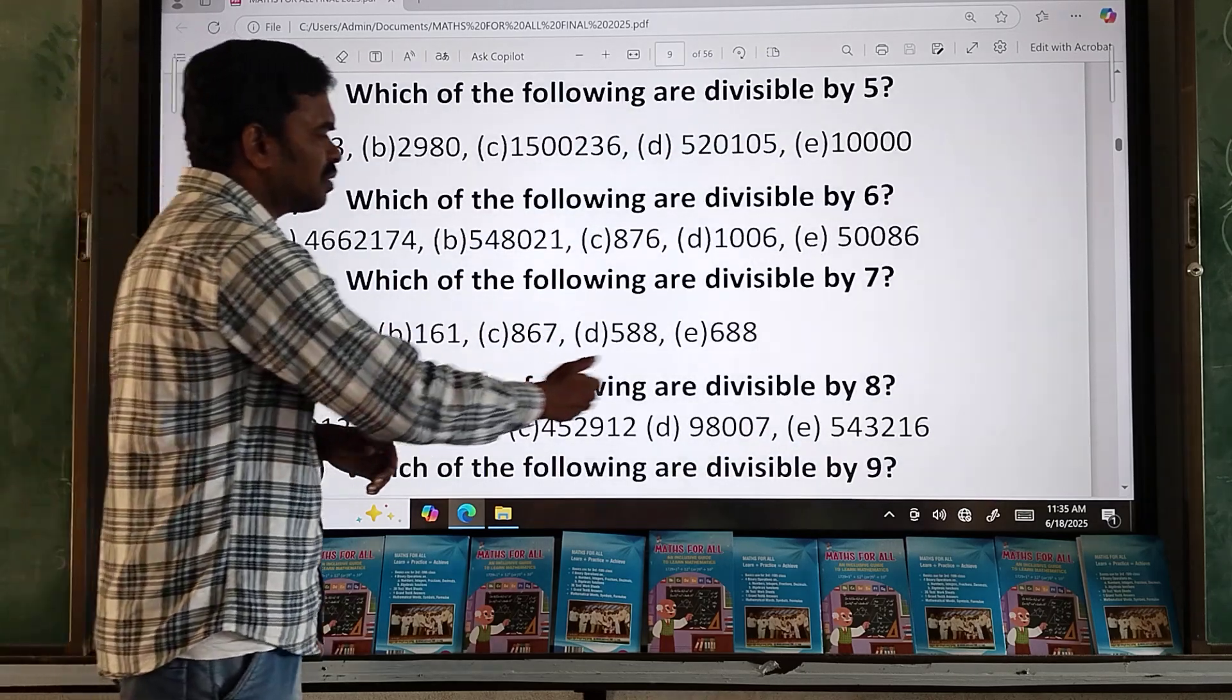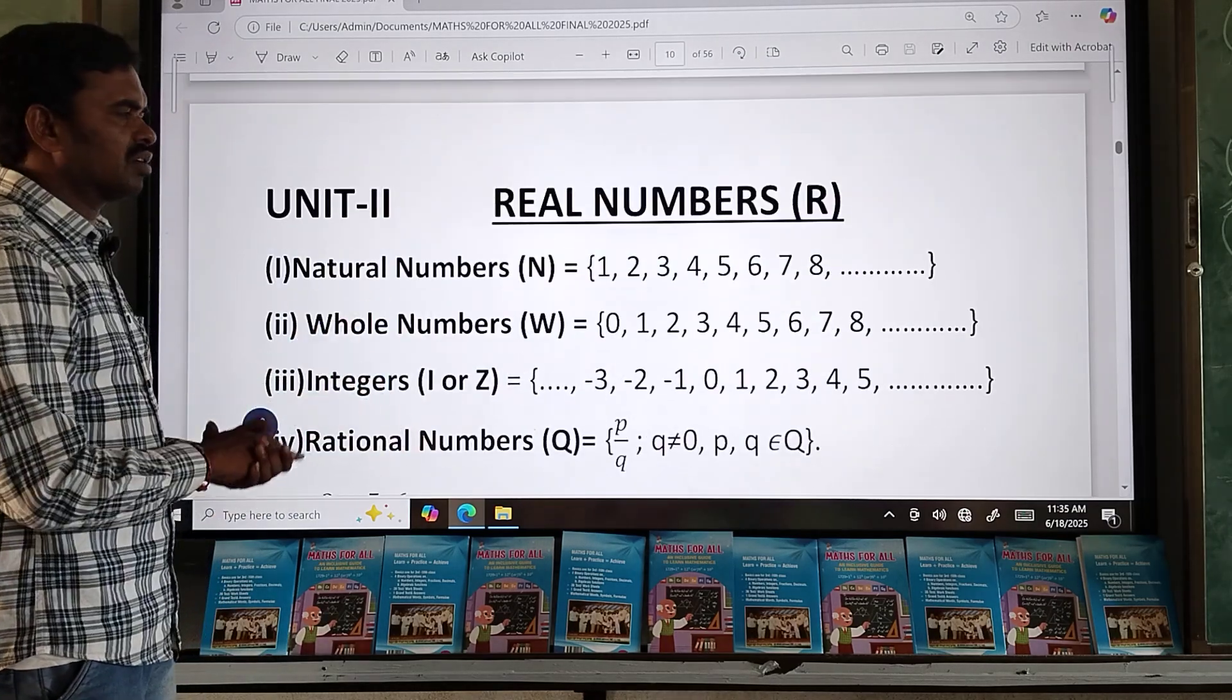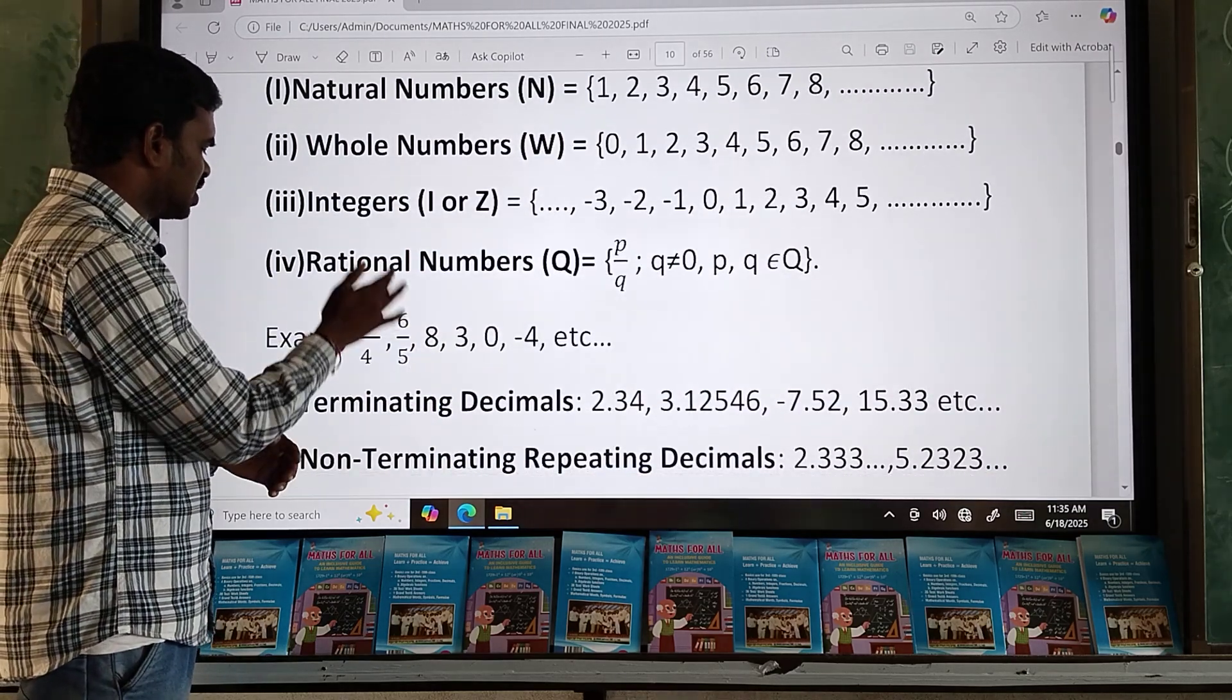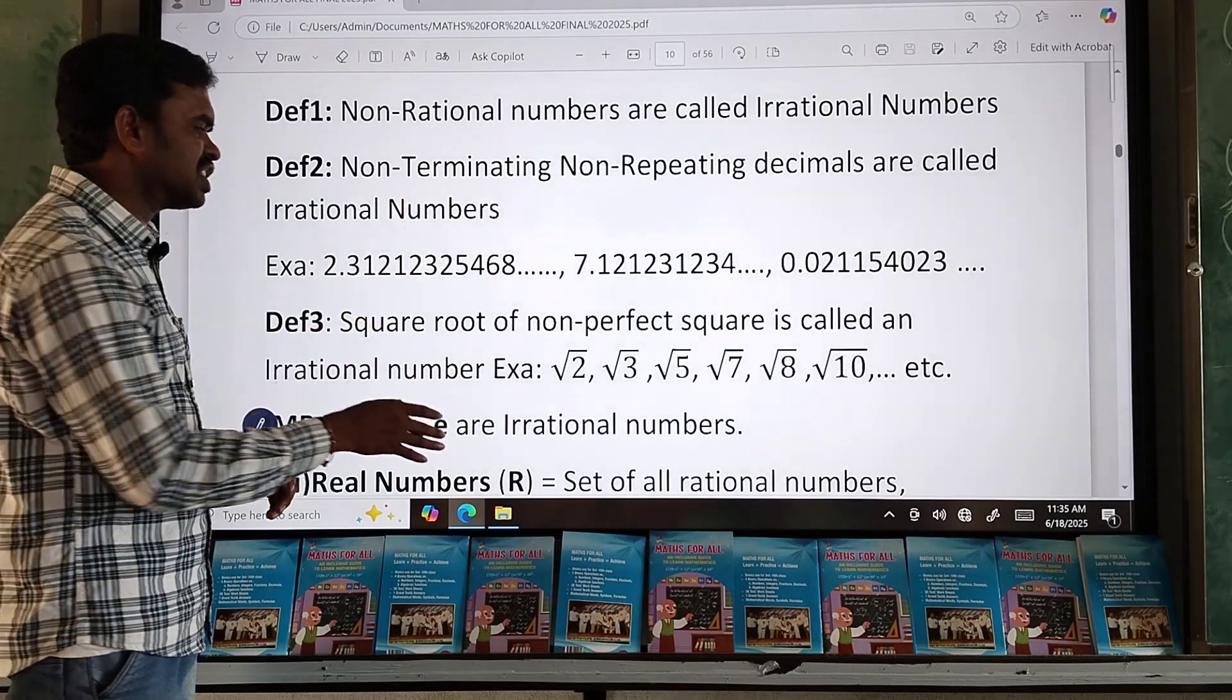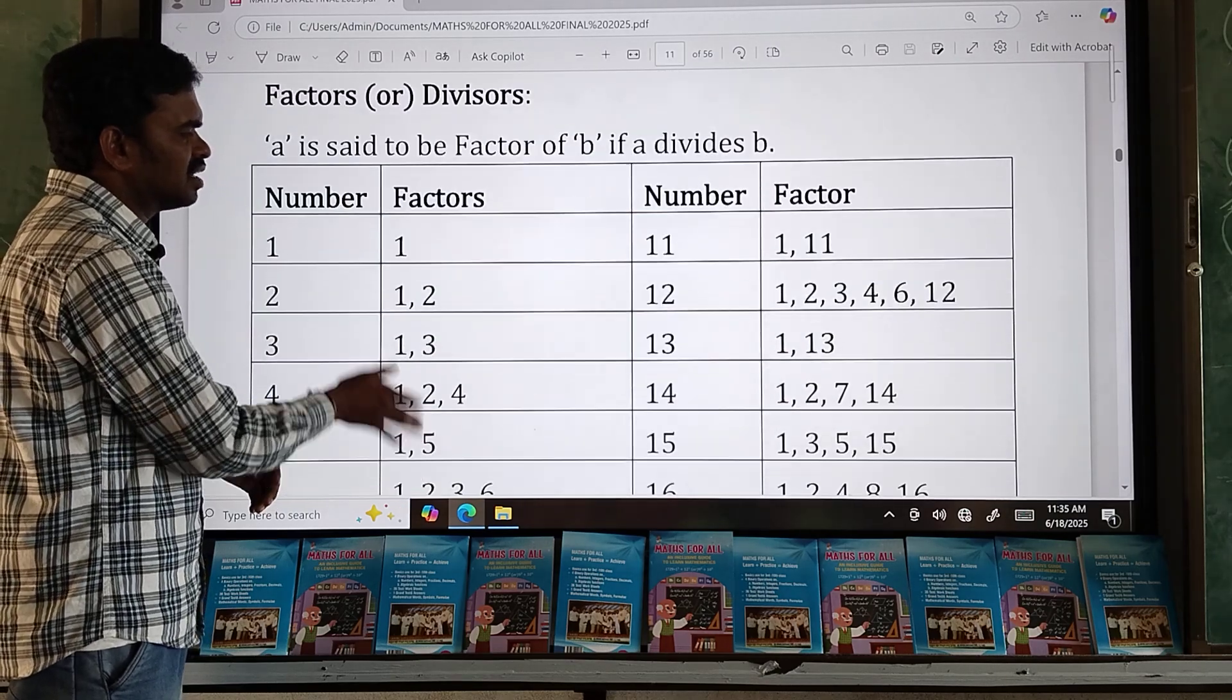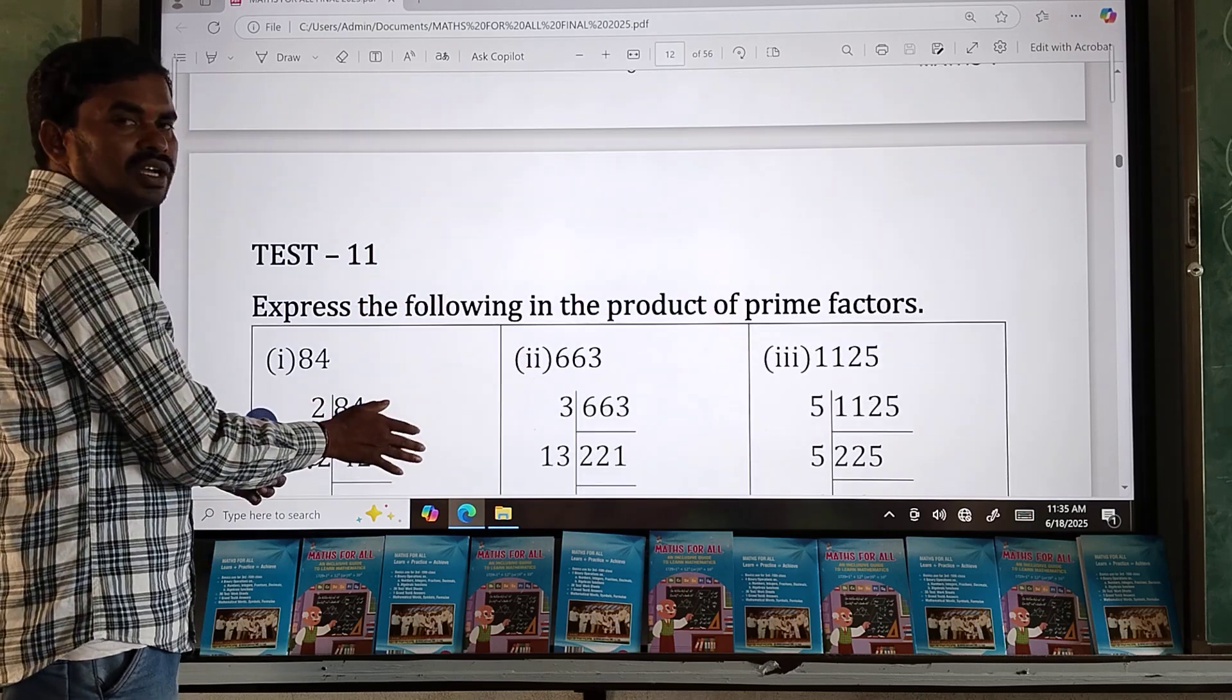See, one question for example: which of the following are divided by 8? Options are given. In that, 2 or 3 are divided by that number. Next, real numbers. In this number section: what are the natural numbers, what are the whole numbers, integers, rational, and irrational. For irrational numbers, we have 3 definitions. Next, what are the even and odd numbers, what are the factors, divisors.